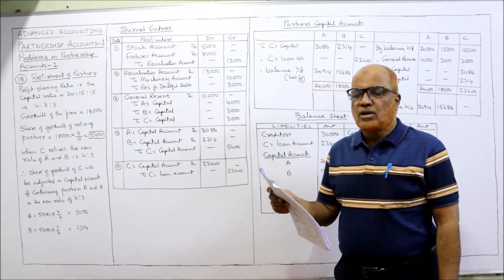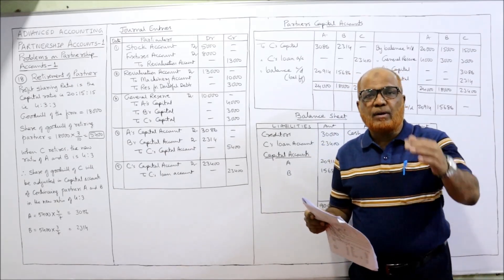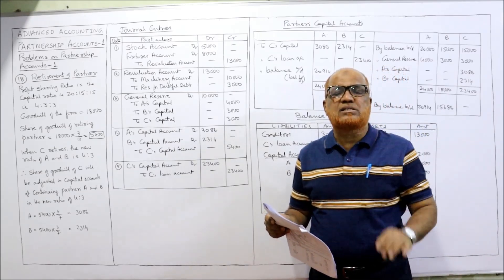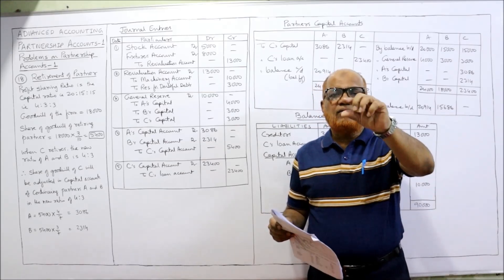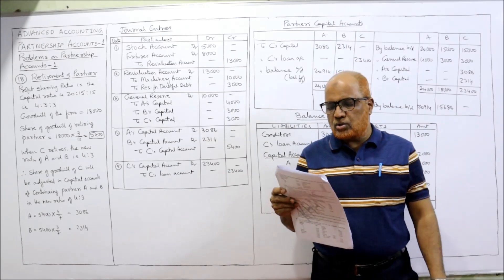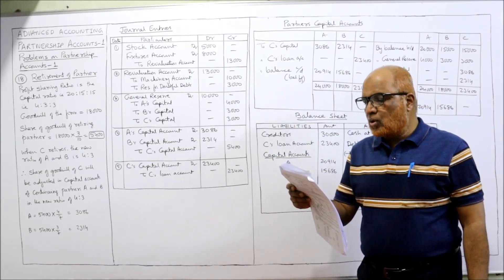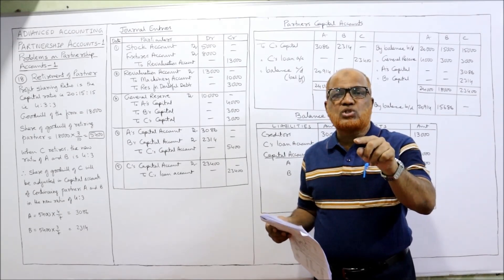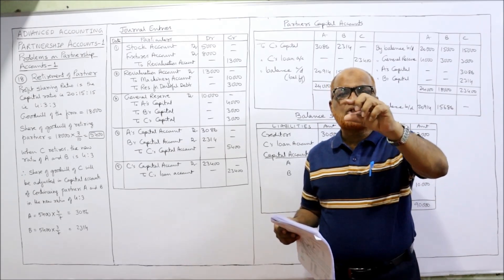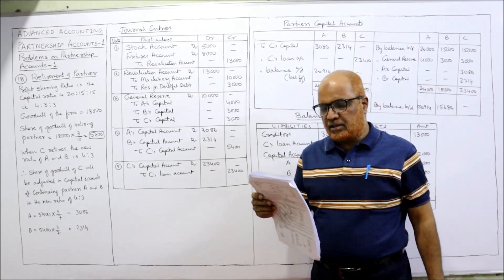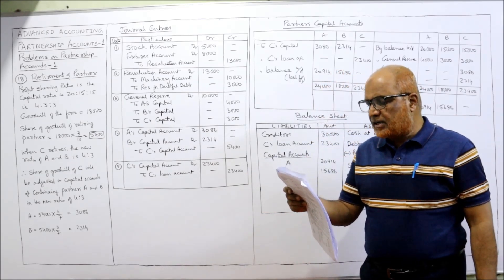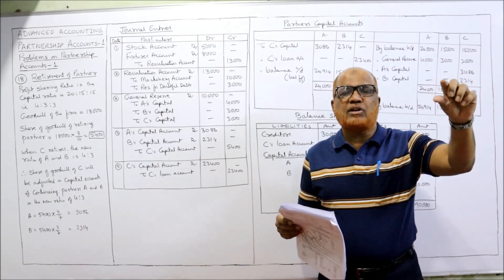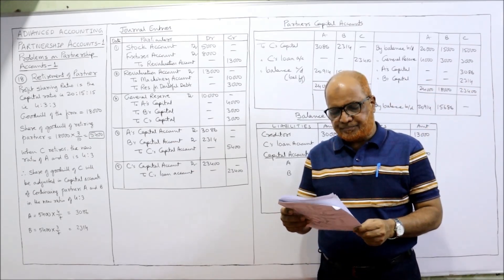Machinery at 15,000 — the book value of machinery is 25,000, so we bring it down to 15,000, decreasing it by 10,000. Machinery account is credited, revaluation account is debited. Fixtures: the book value is 2,000 but we have to make it 10,000 — fixtures have to be increased by 8,000. Entry: fixtures account debit, revaluation account credit. A reserve of 3,000 for doubtful debts has to be created — revaluation account debit, reserve for doubtful debts credit.